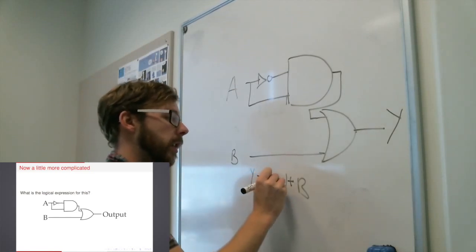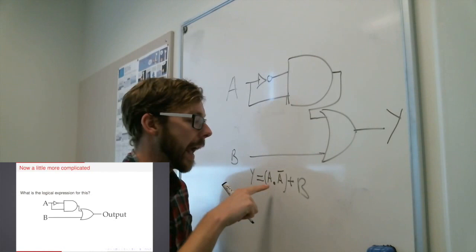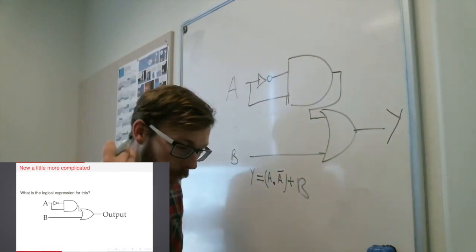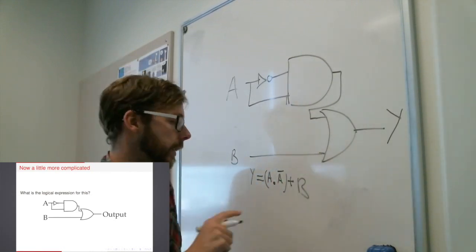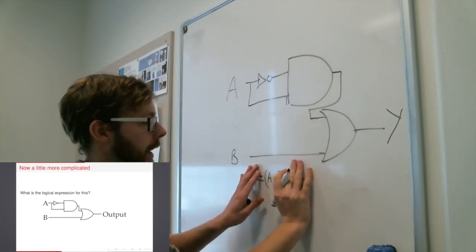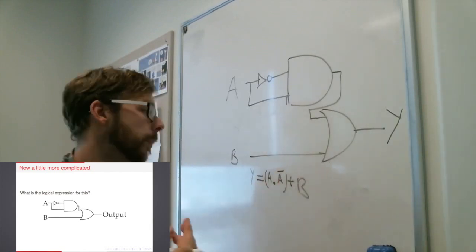A and NOT A. Now the interesting thing about A and NOT A is that regardless of what value A takes, that expression there, I'm just talking about that bit, that A and NOT A, that will never be true.